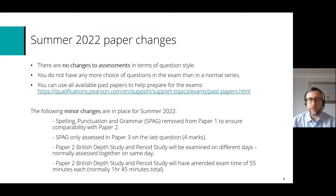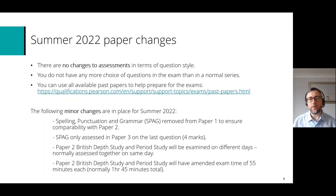The other change to be aware of is that the paper 2 British Depth Study and Period Study will now be examined on different days. They were normally assessed together on the same day — paper 2 is normally 1 hour 45 minutes — but because they're being assessed on different days, we've split that into two separate exams of 55 minutes each.